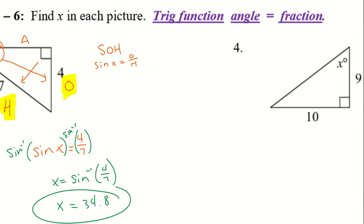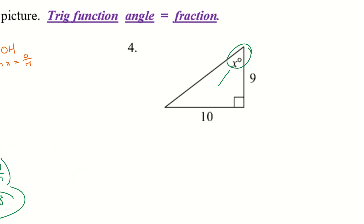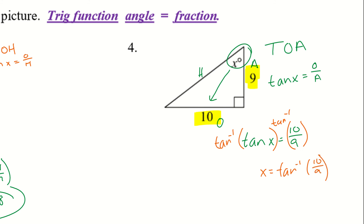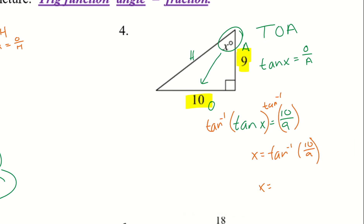Example 4: identify the angle we're working with and label opposite, adjacent, and hypotenuse. I know sides 10 and 9, which are opposite and adjacent — that's TOA. So tangent of x equals opposite over adjacent, which is 10 over 9. Using the inverse of tangent: x equals inverse tan of 10 over 9. Press second, inverse tan, then 10 divided by 9, close the parenthesis — and we get x equals 48 degrees.